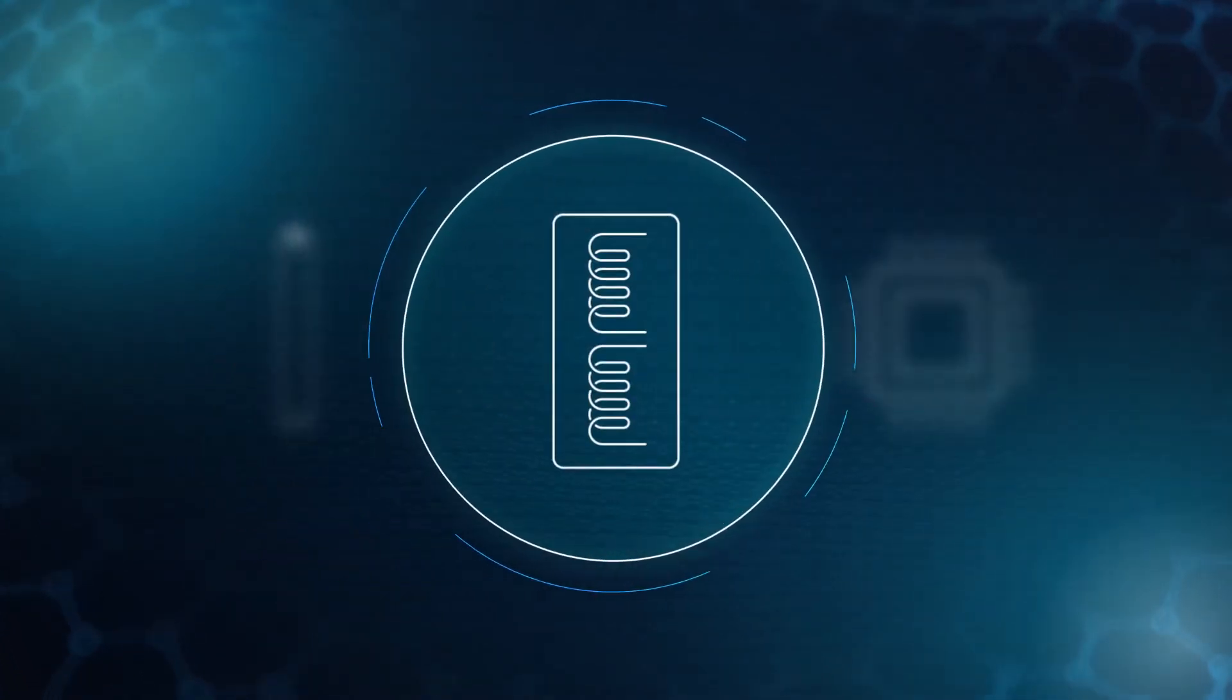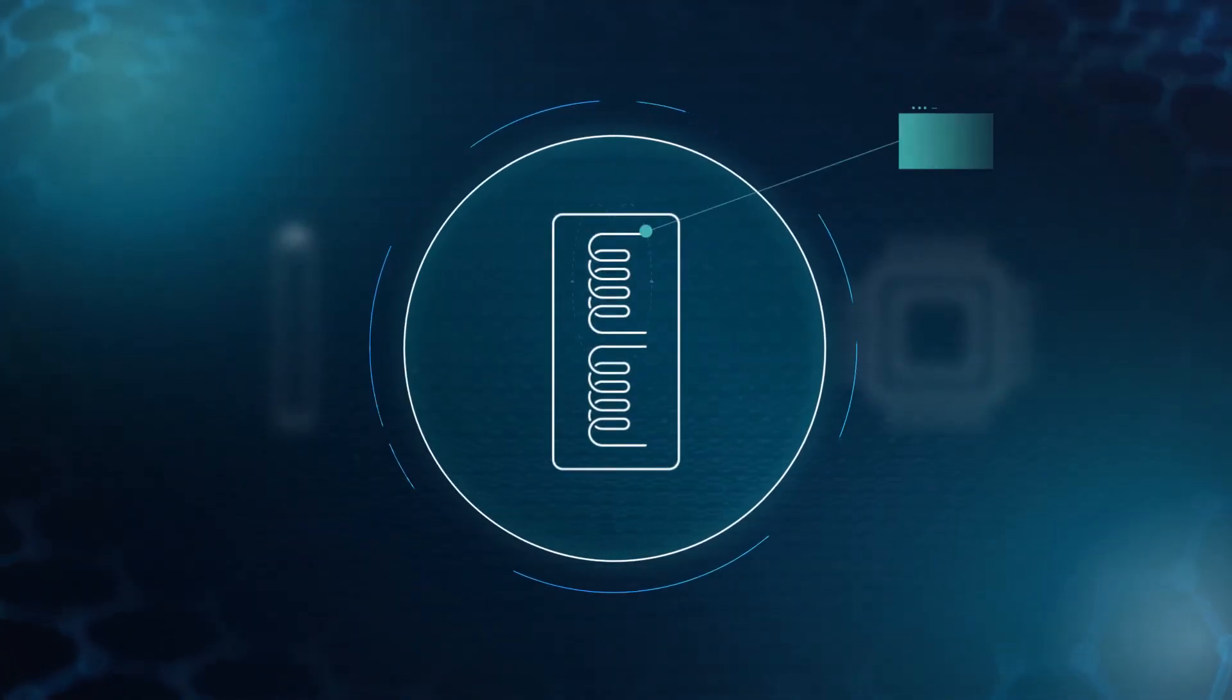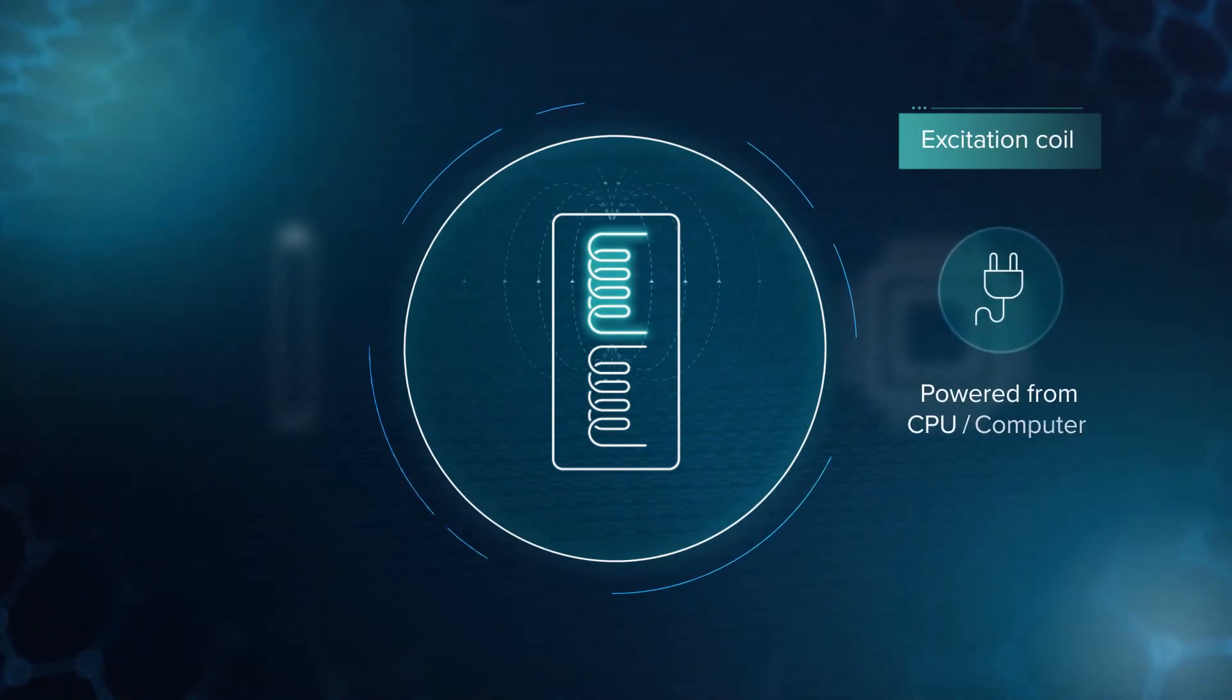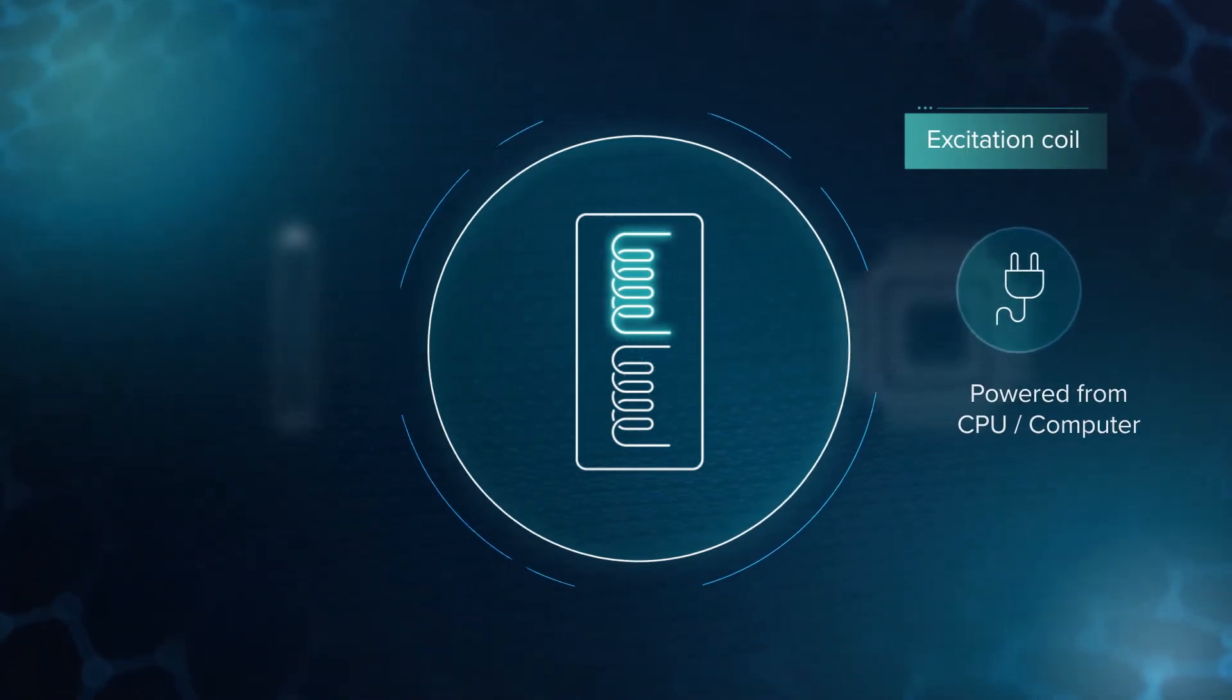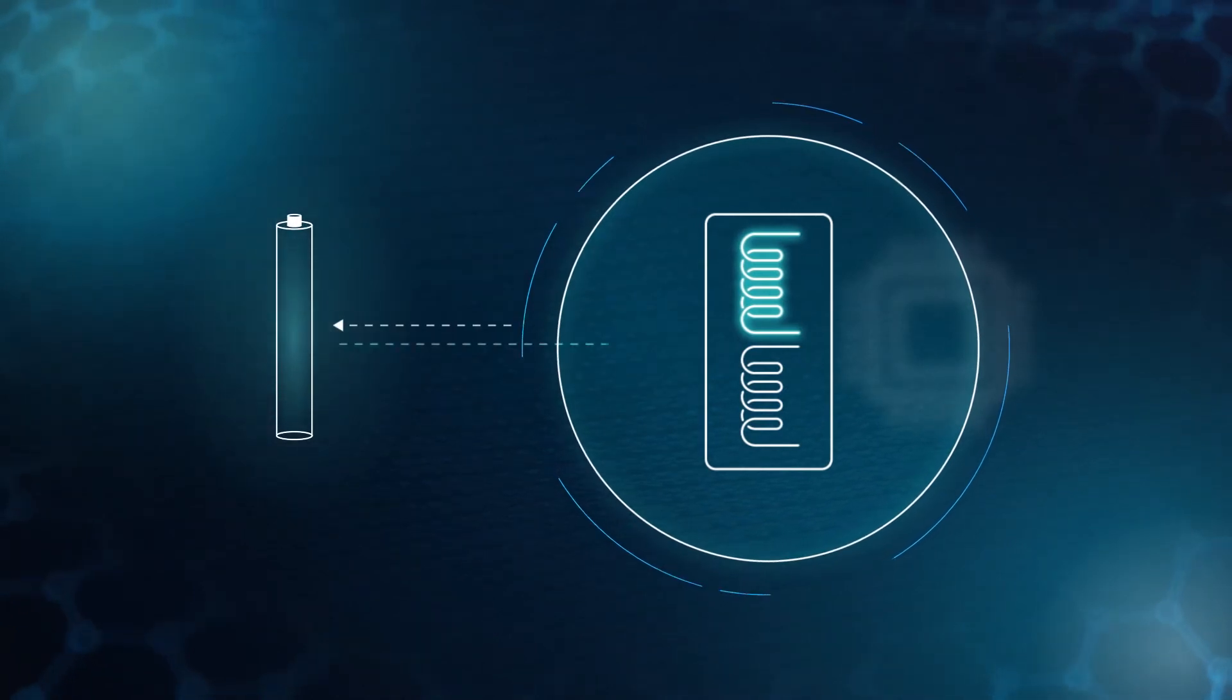The sensing device consists of two coils. The first, excitation coil, is powered with a few milliamperes to create a magnetic field. There is a response of microwire that reflects properties of the external environment.